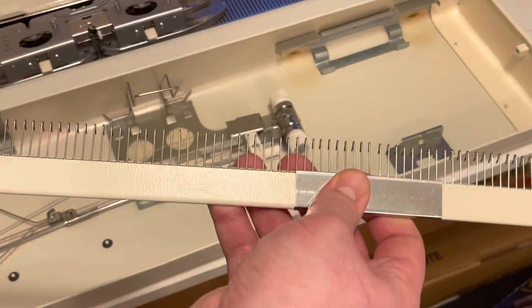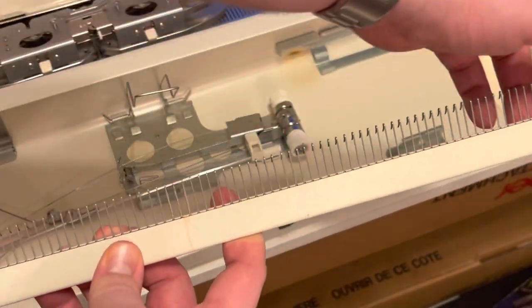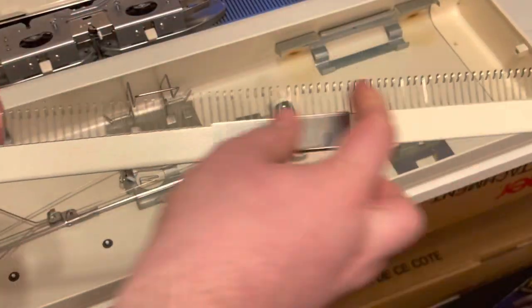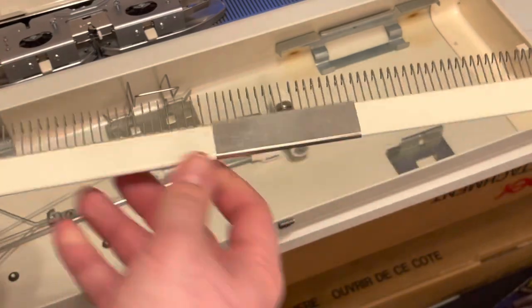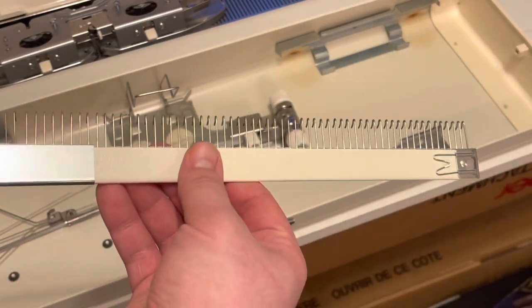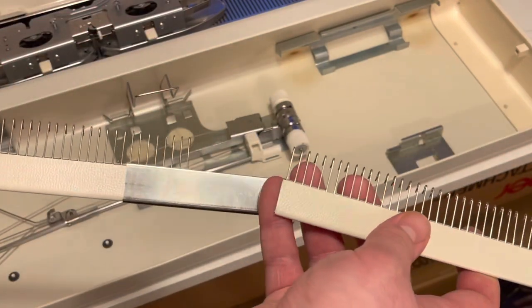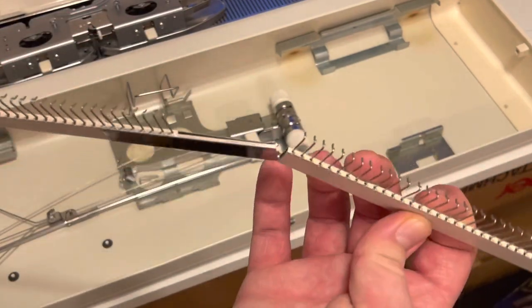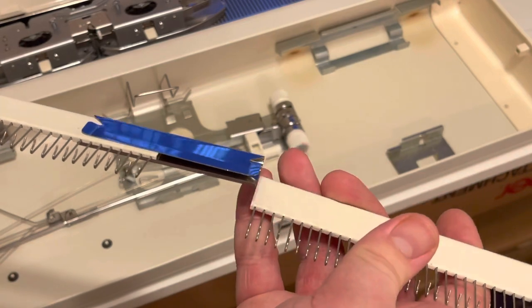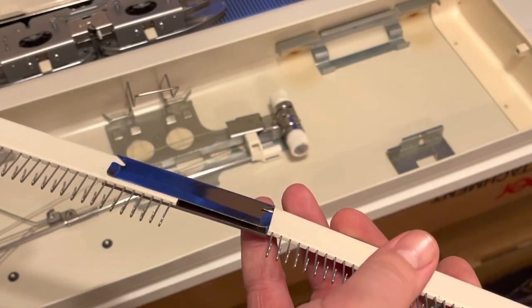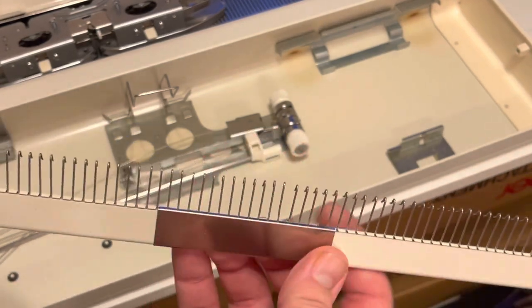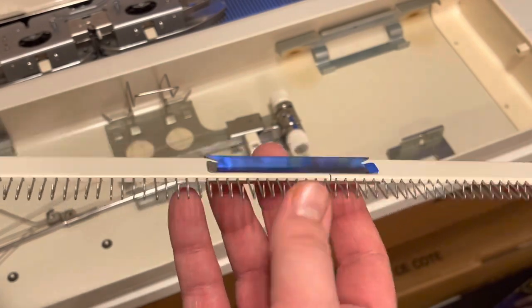Now this is an earlier version, it'll be two separate combs. It'll be a long comb and then a short piece. But the later models have these two built-in combs like this. They just fit together. You just slide them in, making sure of course the teeth are facing the same direction.